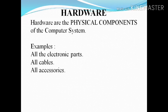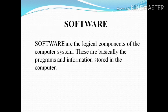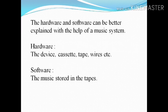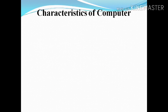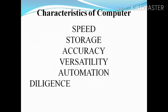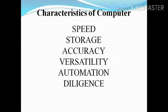Next topic is hardware — it's the physical components of the computer system, for example electronic parts, cables, and all accessories. You can go through the slides also. Next, software is the logical components of computer systems. The difference between hardware and software you can go through from the screen.